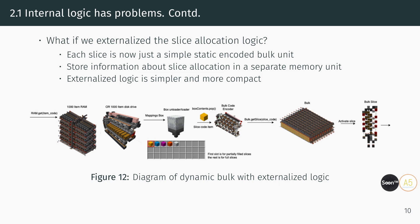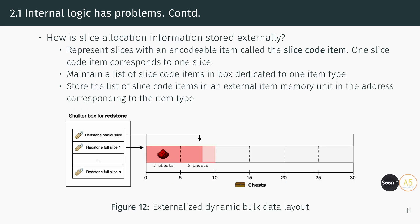Problems with Palapala's design led to the development of external logic dynamic bulk concepts. With this approach, bulk slices could be simplified into static devices, each with a fixed address. The idea was that by moving slice allocation information to a separate, specialized module, the system could be simpler, smaller, and easier to implement. Each bulk storage slice is represented by an item called the slice code item. An encoder reads the slice code item and unlocks the corresponding slice. These slice code items are stored in a shulker box dedicated to each item type, keeping track of the slices allocated for that type.